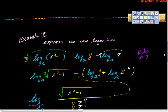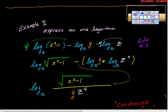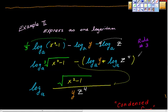All right, so here's example number two. Example number two says express as one logarithm. Often this is written, condense the statement. So here we have one-third log base a of the quantity x squared minus one minus log base a of y minus four log base a of z.